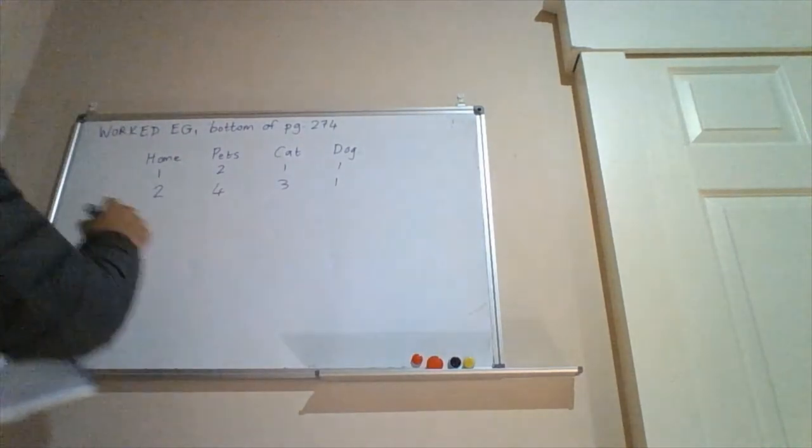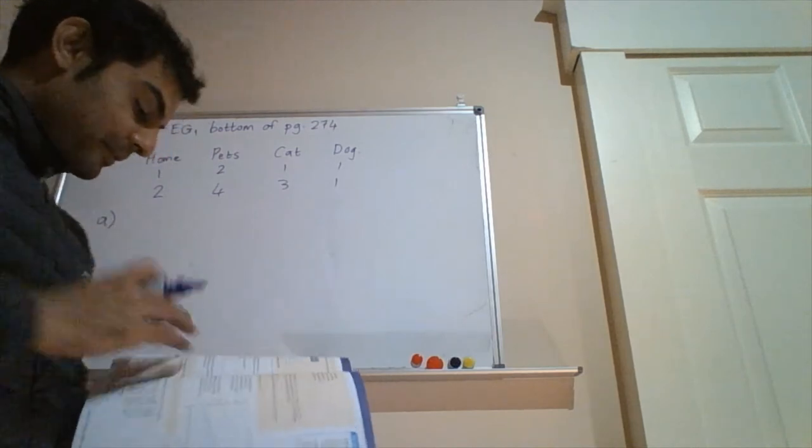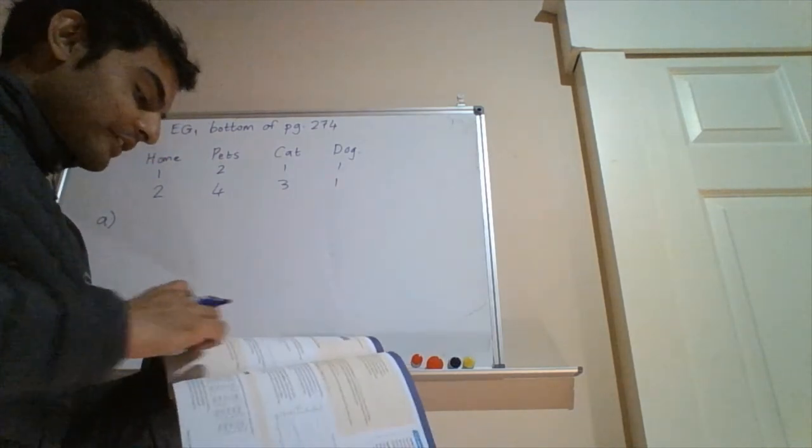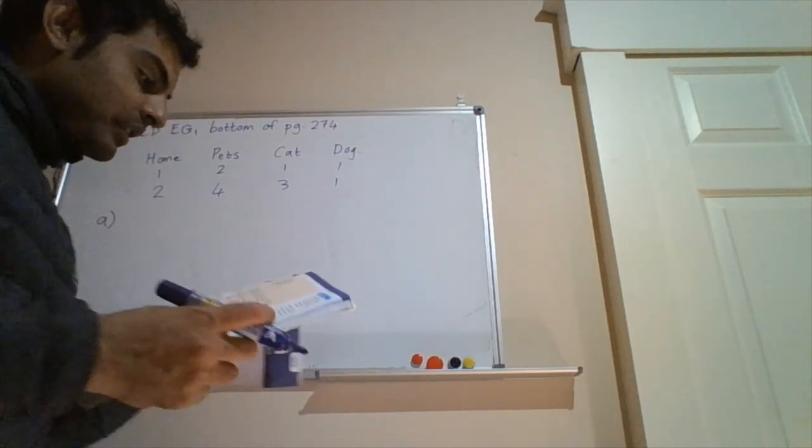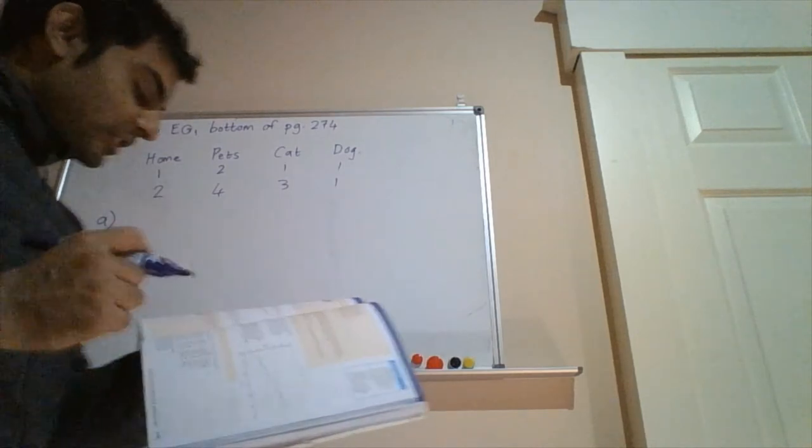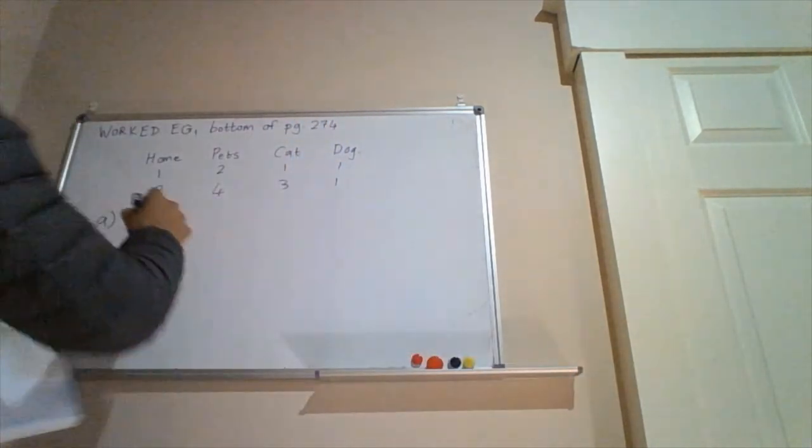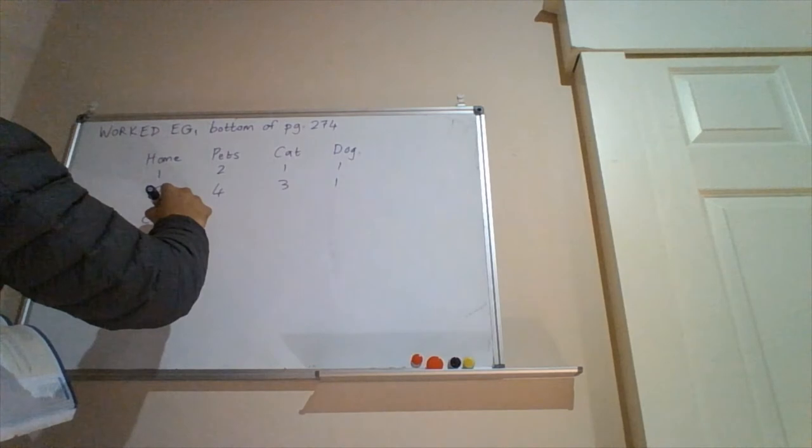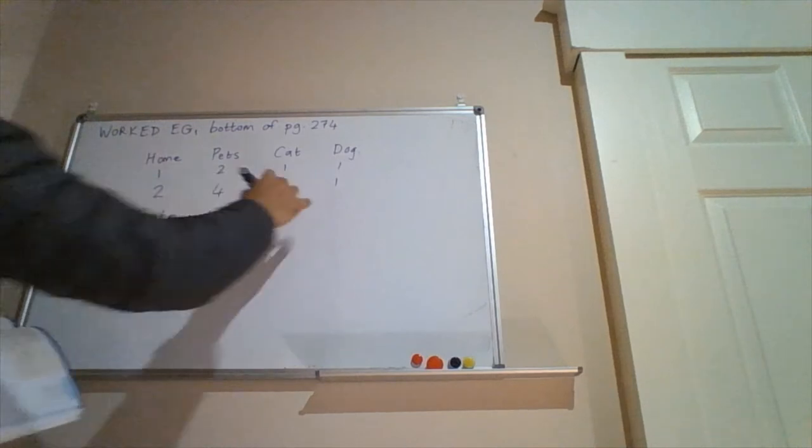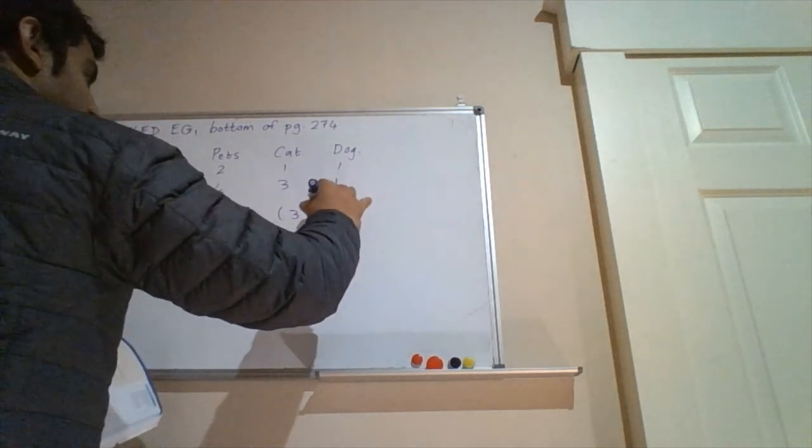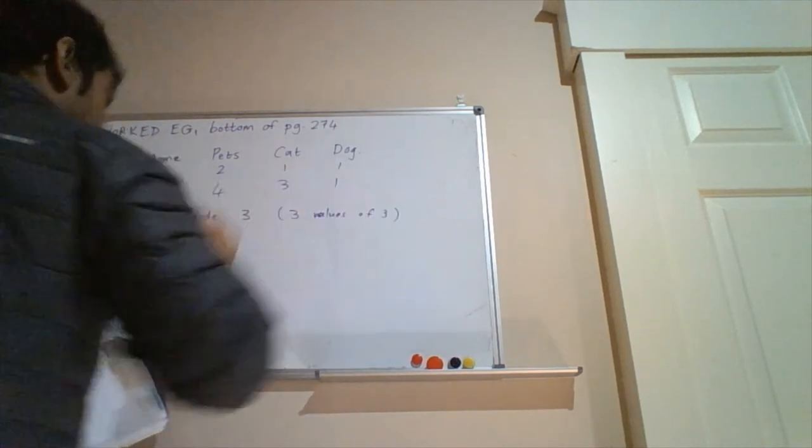Let's go through some of the questions. It asks us to determine the mode for the cat data values. That's question A. So the mode is the most common value. So if we look at the values listed under the cat column, the most common value is three. There are one, two, three threes. Okay, so we would say the mode for cats is three. And you can even put three values of three, if you want it to be specific.